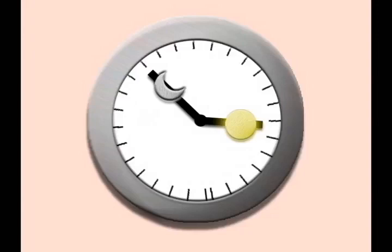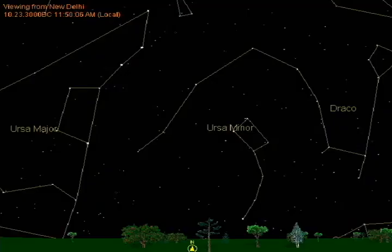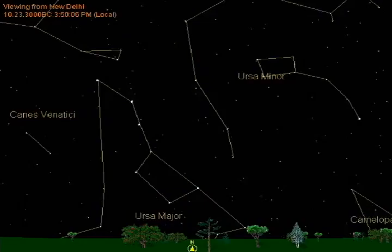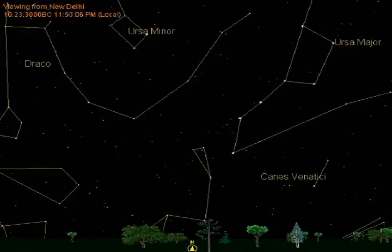In addition to the 28 nakshatras, the Bhagavatam mentions a few other stars, such as the seven sages defining the Big Dipper. These stars are also placed close to the plane of Bhumandala, and their function is to mark the turning of the Kala chakra, the wheel of time.